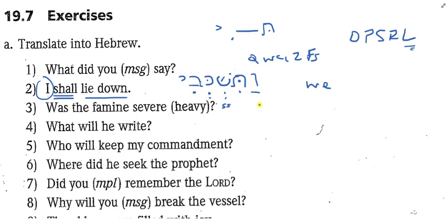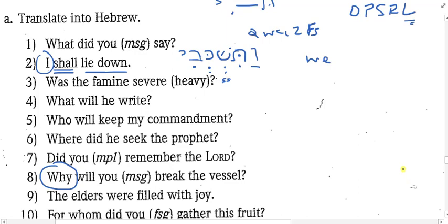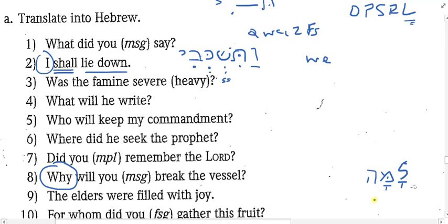Number 8: 'Why will you break the vessel?' One of our new vocab words from the chapter is the question word 'why.' Who remembers what that is? It's the word lamah — there's an accent mark on the first syllable. I remember the meaning of lamah as 'why' because Michael Jackson reportedly had pet llamas, and I'd go, 'why?' Anyway, lamah is really the word mah meaning 'what,' combined with the lamed preposition — so 'for what,' which means 'why.'